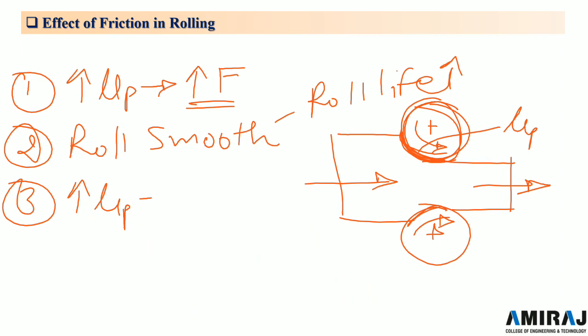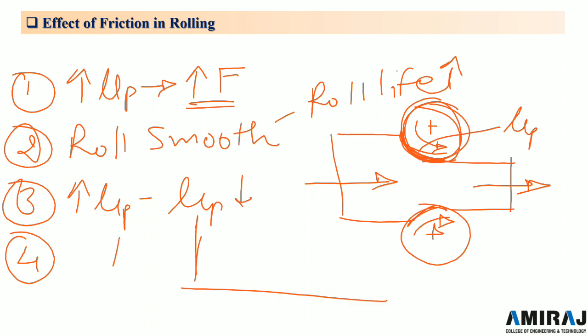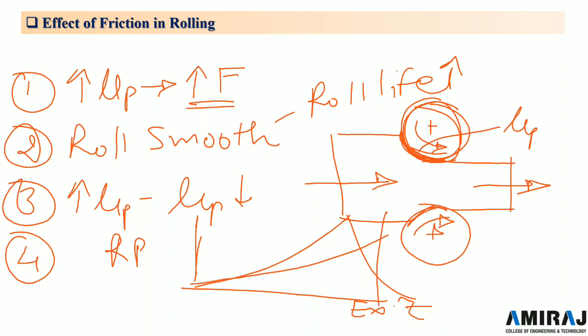The fourth effect is that theoretically the maximum reduction can be achieved when the neutral point reaches the exit. But at that point there will be no friction force to draw the metal through the rolls — the roll will only slip without doing any reduction. When mu_p is reduced to zero, there will be no friction acting on the metal and rolling cannot occur.